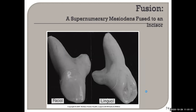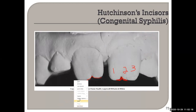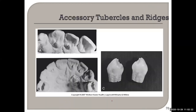Hutchinson's incisors — the screwdriver-shaped incisors. Don't make the assumption that just because the patient presents with this shape they had congenital syphilis. Sometimes it's the way the tooth forms from the three lobes, or it could be attrition or abrasion of some sort causing that type of notching.